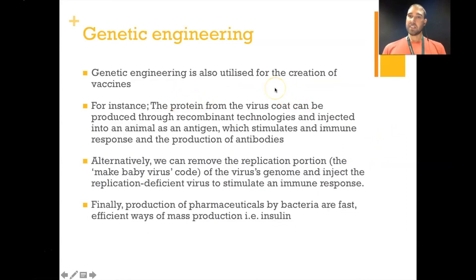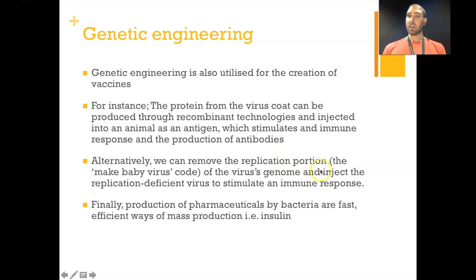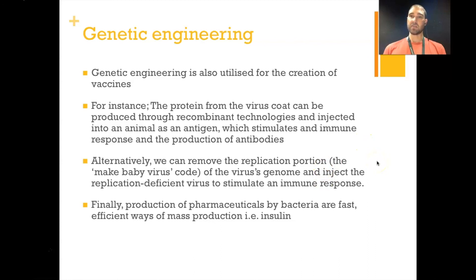Vaccines are a big topic right now. The protein coat of the virus could be produced using recombinant technologies — we could make that protein coat, inject it into an animal as an antigen to stimulate antibody production, and then use those antibodies to help treat people infected by a particular virus. We could also remove the replication portion of the viral genome and inject the replication-deficient virus into people to stimulate an immune response. That way the virus is produced but can't replicate, allowing your body to produce antibodies familiar to that virus, protecting you from further infection.